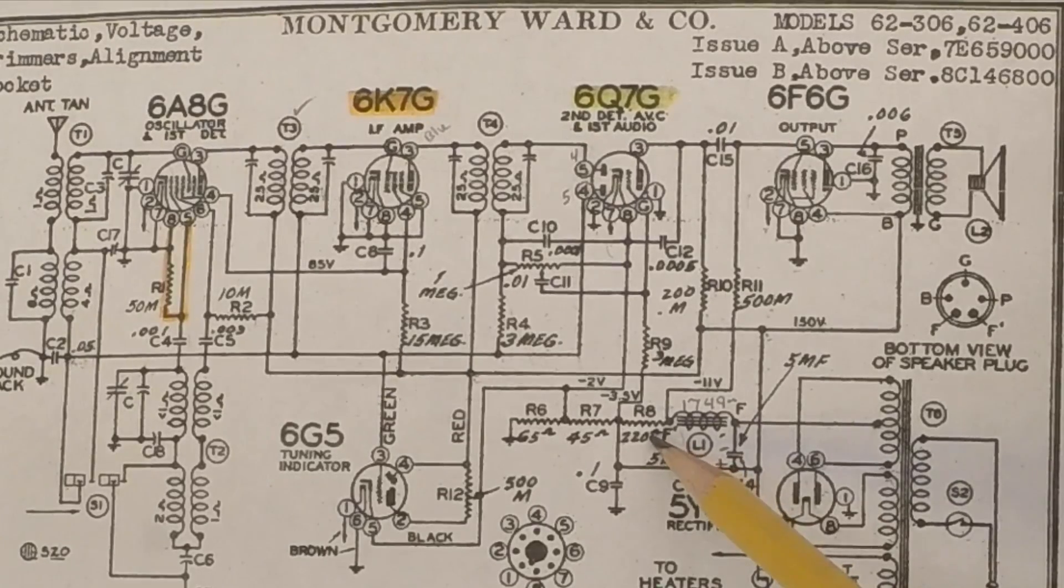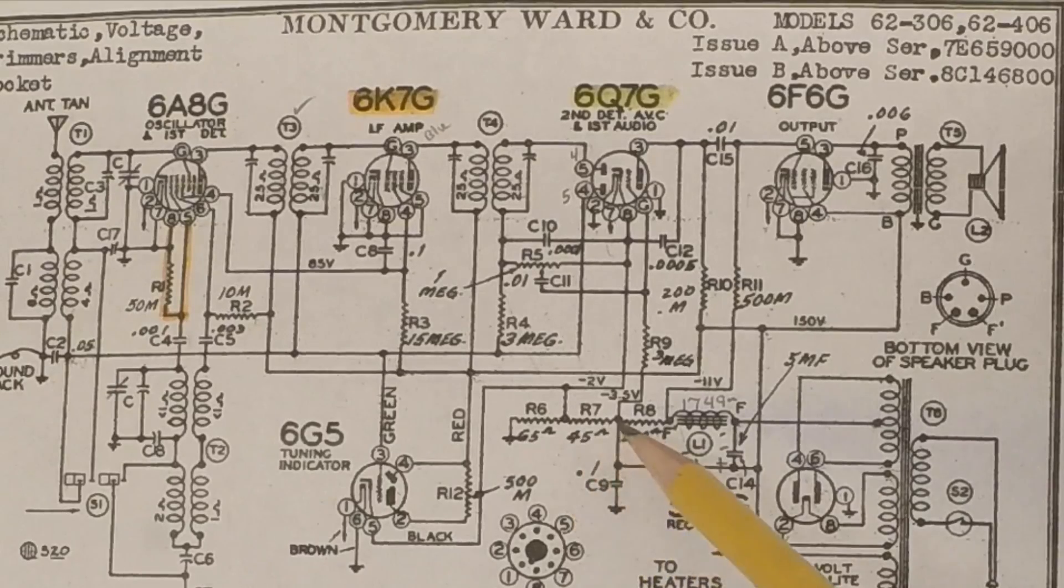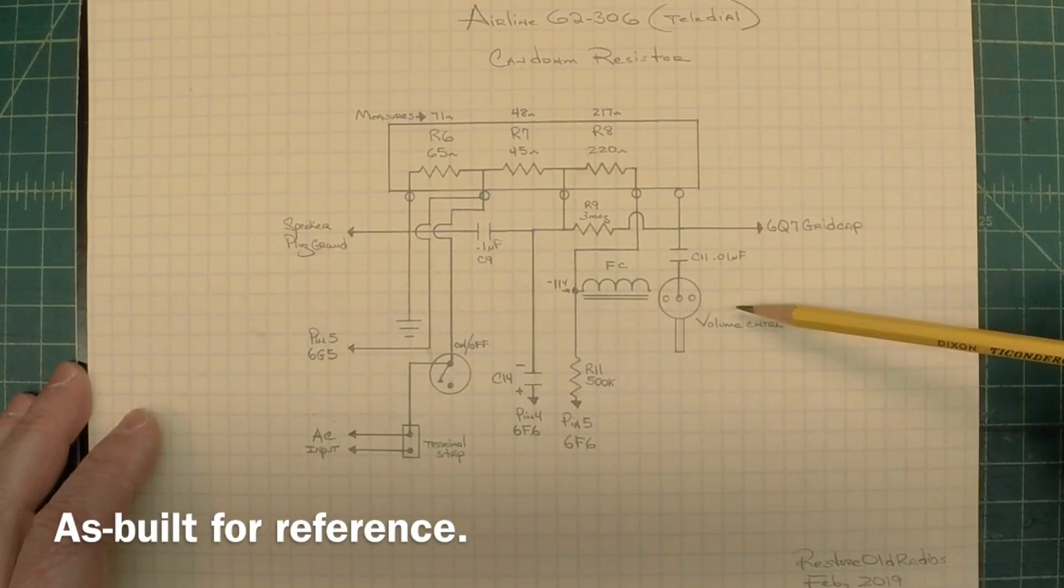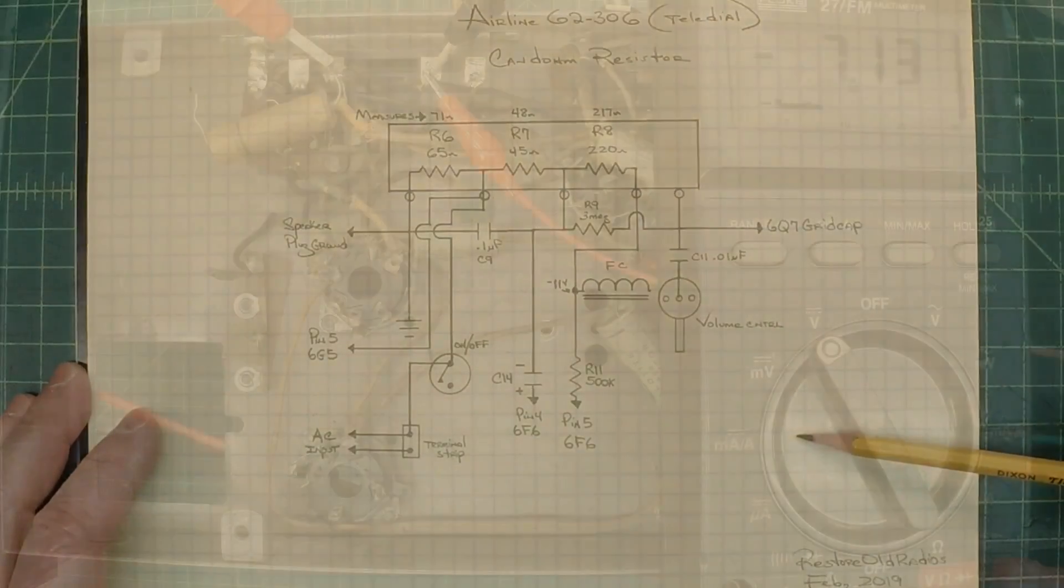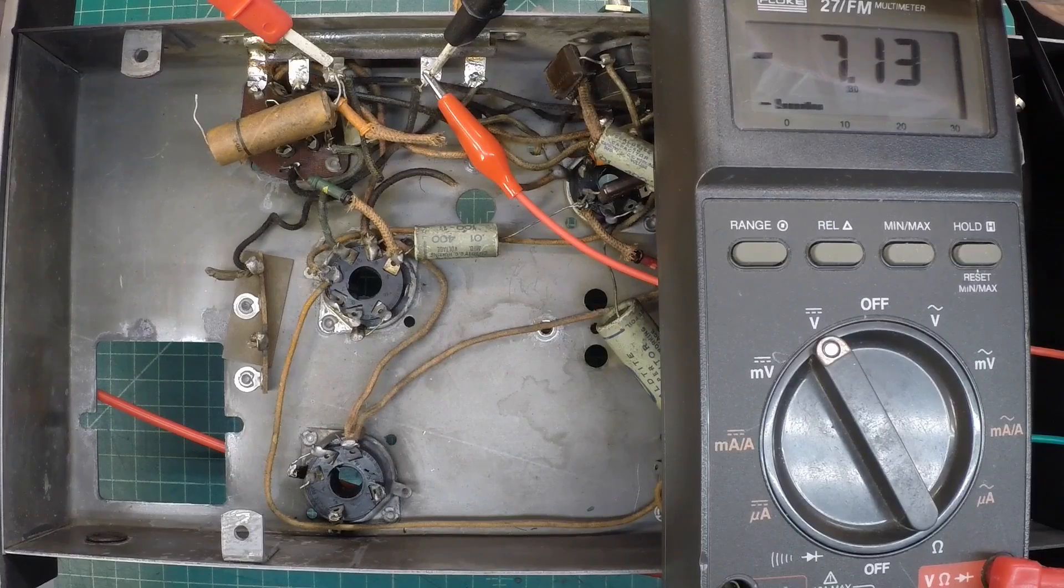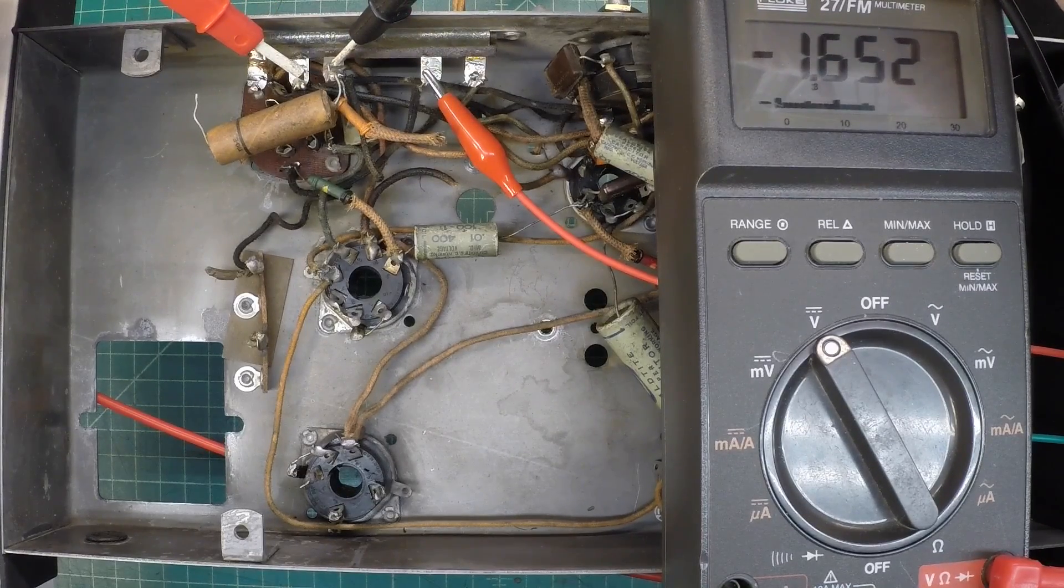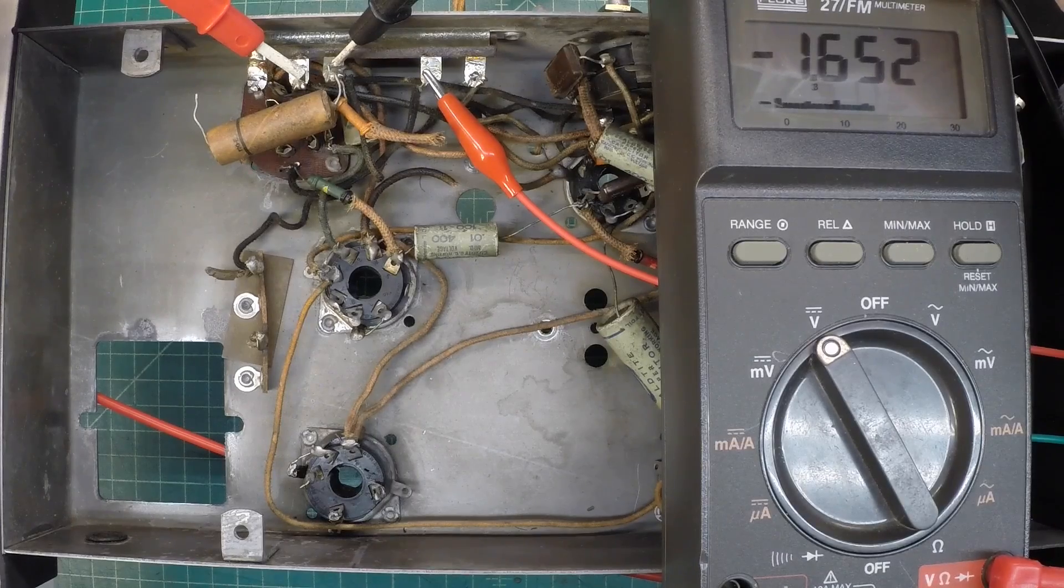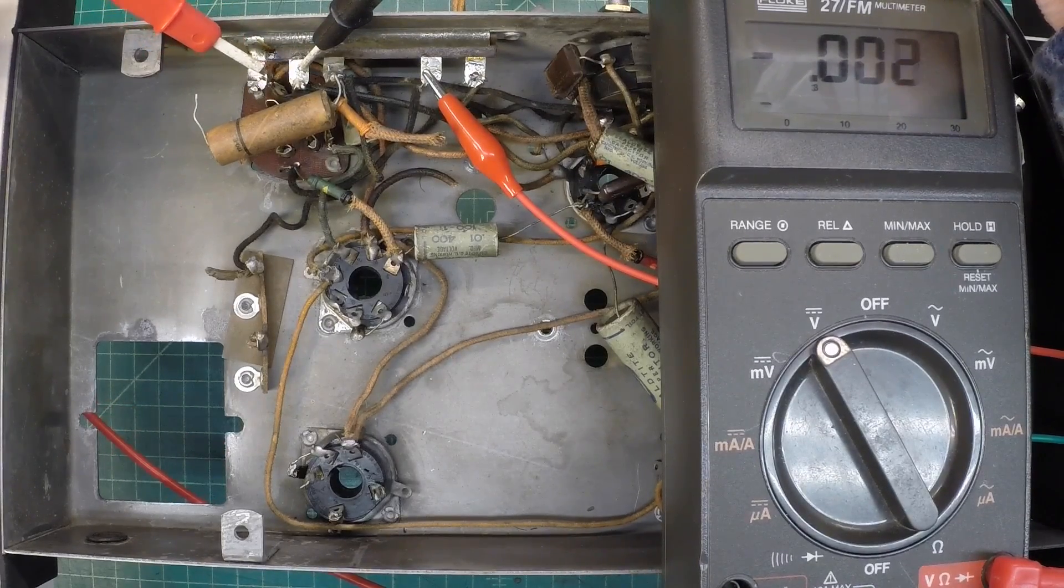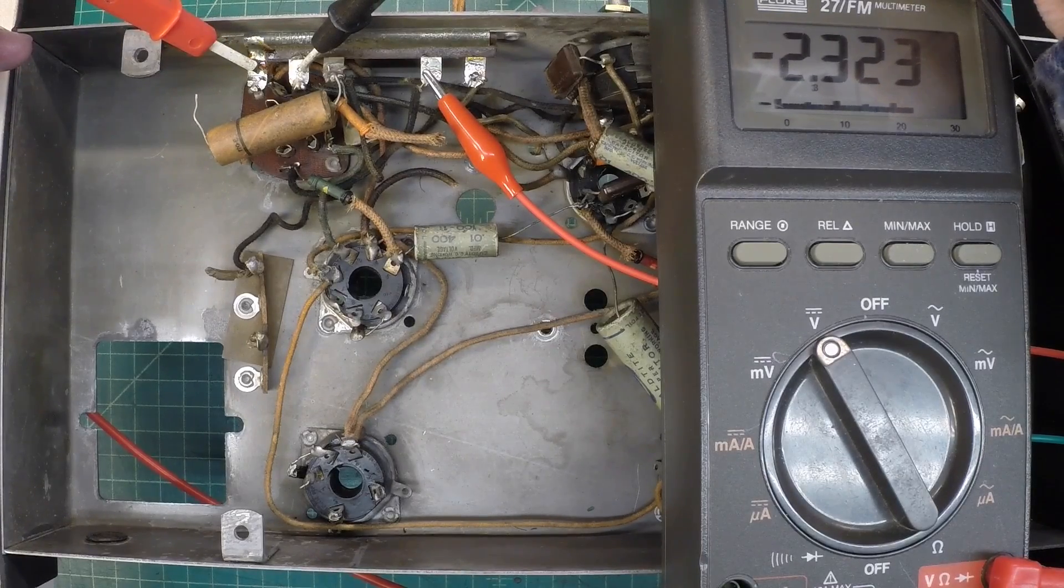And then we'll do the math, the exercise of sizing the replacement resistor. 7.12 volts drop. 1.652. And you can see here the last section, 2.323.